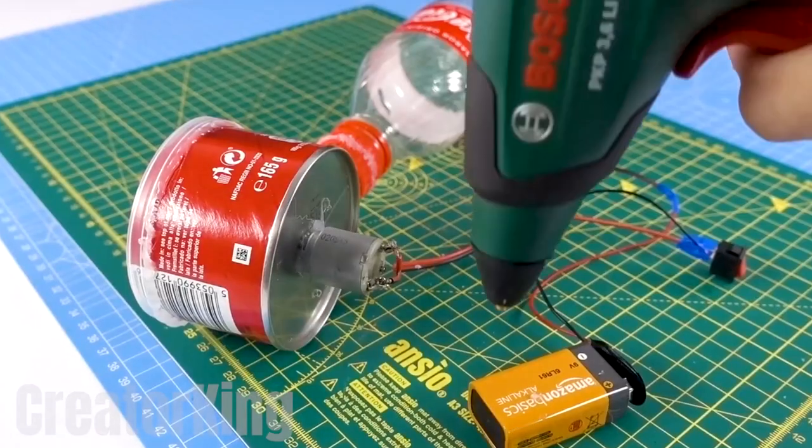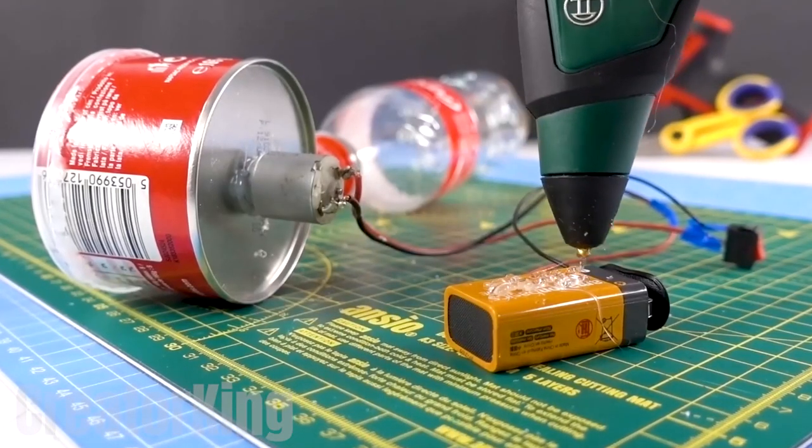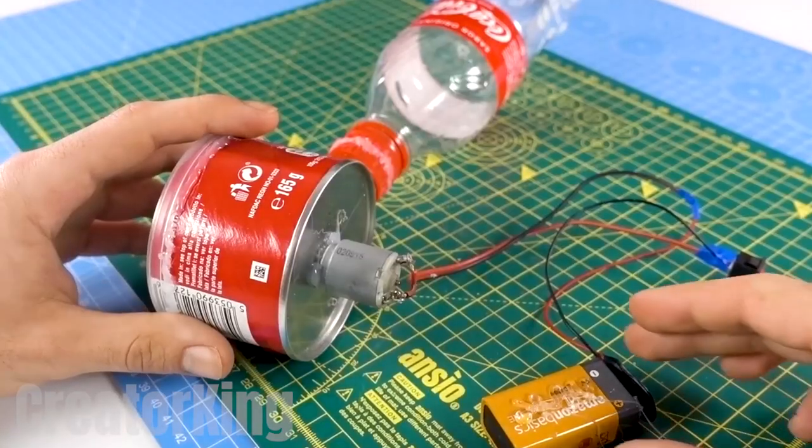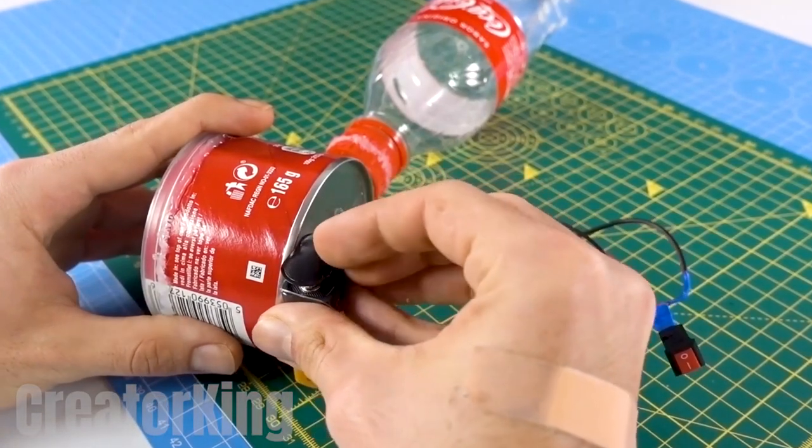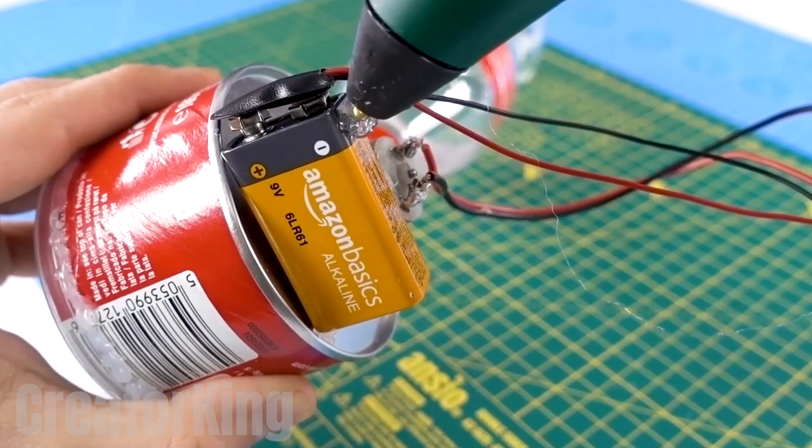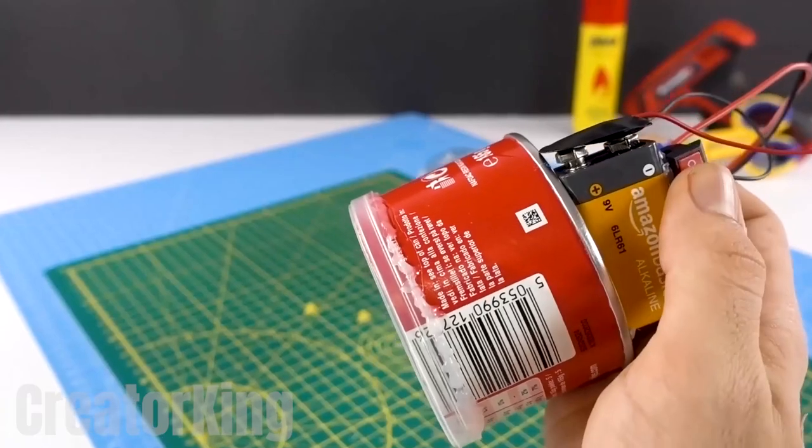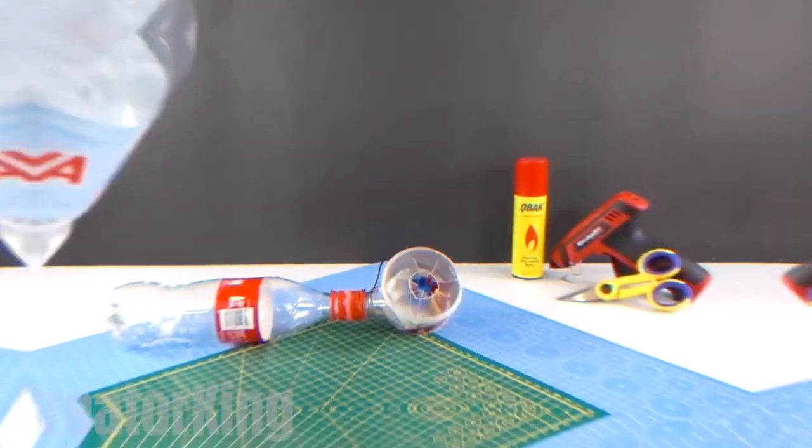Having completed the electric circuit we already know that we'll have to glue the battery to the base of the motor and the switch to the battery with superglue. Works like a charm.